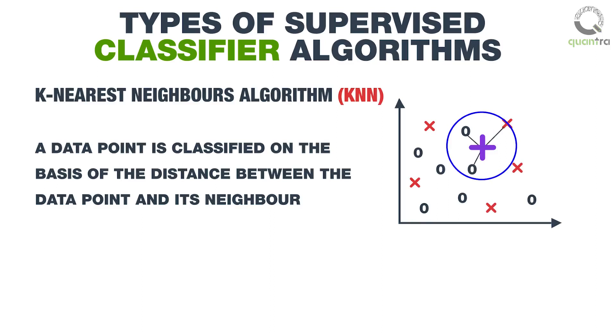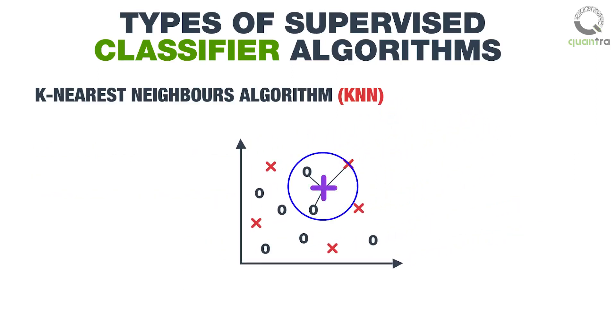Now, within the circle, the number of zeros is more than the number of Xs. Hence, the class of plus will be zero. In this fashion, KNN is used to classify a data point into predefined classes.